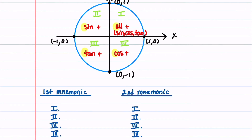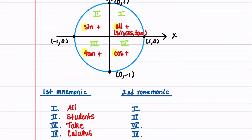We'll now write down two mnemonics that can help us remember that. In the first quadrant, we need a word to remember the letter A for all functions being positive, so that is the word 'all.' In the second quadrant, we need to remember S, so we'll use the word 'students.' In the third quadrant, we need to remember T — we'll remember that by the word 'take.' And then in our fourth quadrant, we need to remember C, and we'll remember that by the word 'calculus.' So the phrase to remember is 'All Students Take Calculus,' going from quadrant one all the way to quadrant four. The second mnemonic I learned from one of my student learning assistants: 'Add Sugar To Coffee.' That's another nice way to remember which functions are positive.